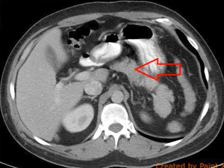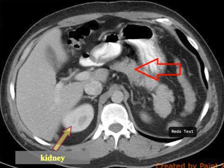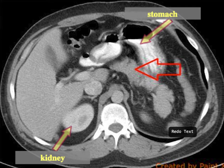The red arrow is pointing to the pancreas. The pancreas is an organ that lies right in the middle of the abdomen and it's surrounded by several structures. I want to show some structures that you could see on this section of the CT scan — that's the kidney, and anterior to the stomach you've got your pancreas.